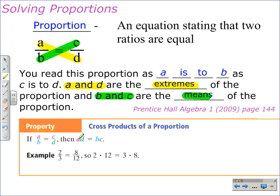So we have the cross products here: a times d and b times c.